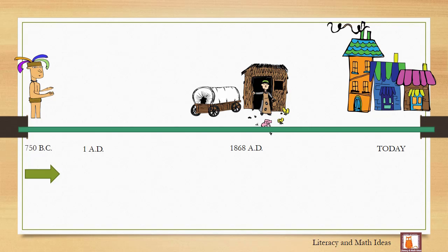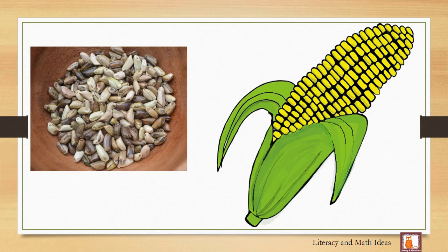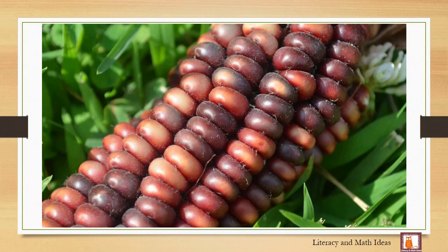Over time, the teosinte plant was bred to become the type of corn that we eat today. Some corn is used as animal feed. Some is used as sweet corn. There are also popping corn varieties.